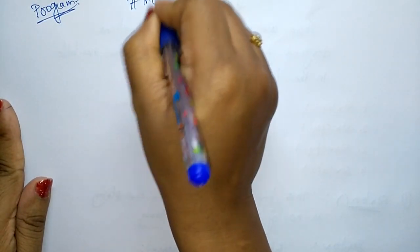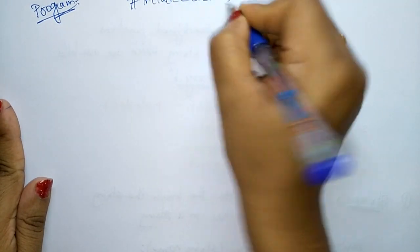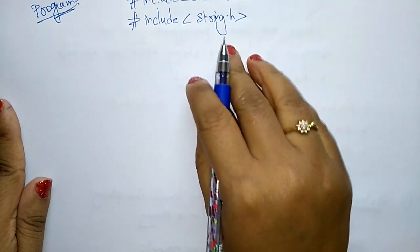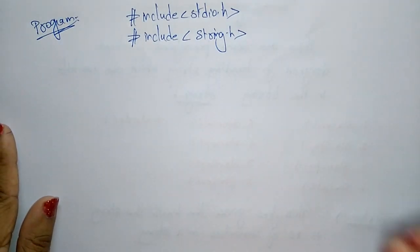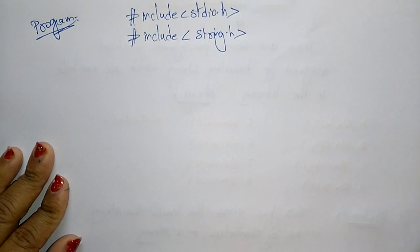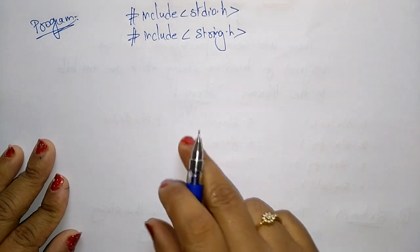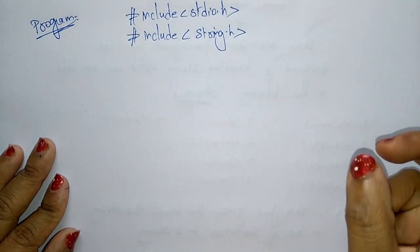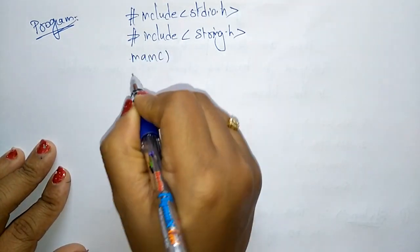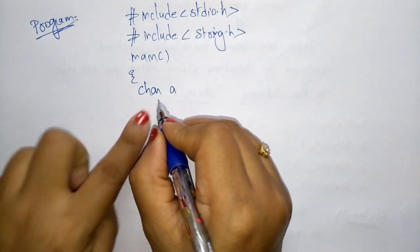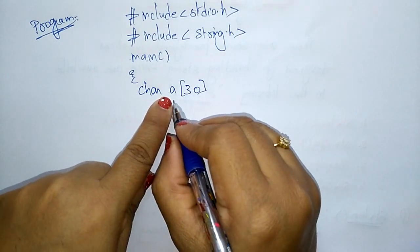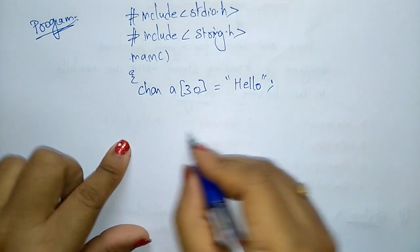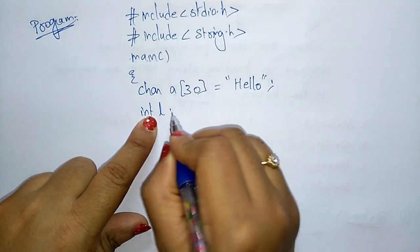We write #include stdio.h for calling all input/output functions, and we must include string.h because we are using the predefined strlen function. If you mention string.h, at compile time the program jumps to that string.h file, calls that particular function, and executes it. In the main function, I am declaring a character array 'a', initialized with the string "hello".